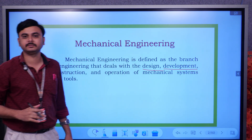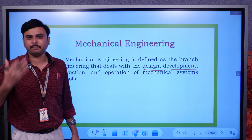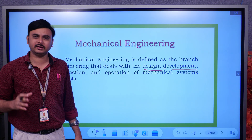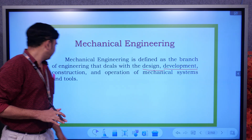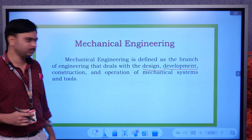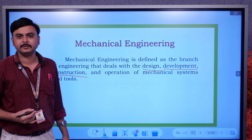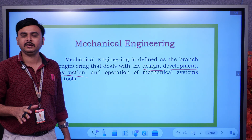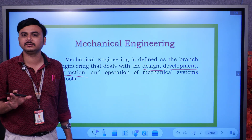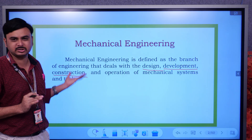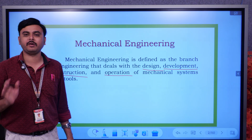After designing, we move to development — whether that is a product or any kind of plan. Everything has to be developed after design. Afterwards comes construction, which is used both in civil engineering and in mechanical engineering. If you want to construct a machine, you must consider how the machine parts should be. Finally comes operation — once construction is over, the machine or system has to operate.